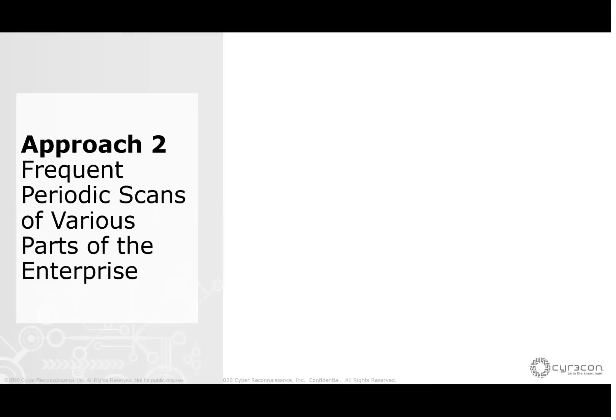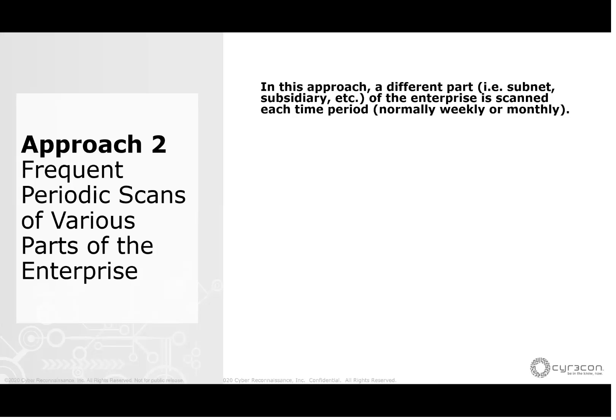This leads to the second approach: frequent periodic scans of various parts of the enterprise. The enterprise is divided into subunits — normally subnets or subsidiaries — and each unit is scanned within a given time period. This normally happens quite quickly; usually weekly is what we see. Approach 2 is the most common approach in more mature organizations.